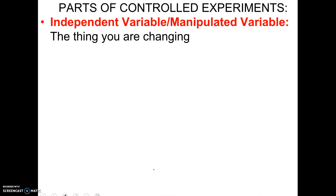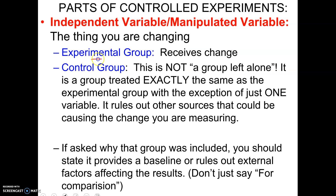Let's jump into the parts of a controlled experiment. The independent variable — also called the manipulated variable — is the thing you are changing; you manipulate it, it's in your control. In our music experiment, the experimental group is the group receiving that change, which would be the group that listened to music. We compare them to a control group — the second group. The control group studied the same material, took the same test, and had a similar study environment. The only difference is that the control group did not receive the independent variable, which in this case means they did not listen to music.